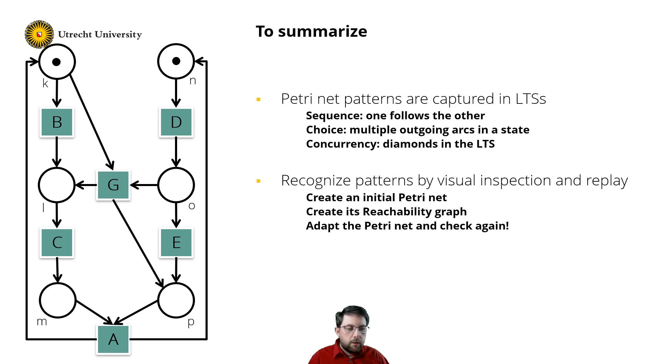The procedure is always the same. Create an initial Petri net. You may even start in the middle of a label transition system. Create a reachability graph of your constructed net. And check how you should adapt the net to get a closer fit to the given label transition system. And you repeat this process. Good luck modeling!